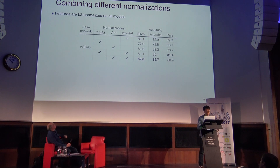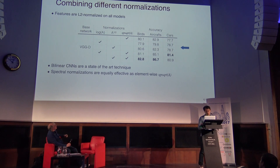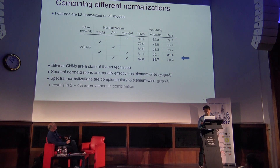This table reports accuracy with different normalization schemes, and we always use L2-normalization on all models to ensure the feature is robust to the overall scale. The first row uses the element-wise square root, corresponding to the original bilinear CNN model, and achieves 80% accuracy on the first dataset. With matrix logarithm or matrix square root alone, the model also achieves about 80% accuracy, showing these three normalizations work equally effectively individually. The last two rows show results when we combine spectral normalization with element-wise square root normalization. With matrix square root, the result improves by 2–4%, showing these two normalizations are complementary and provide added benefit when combined.